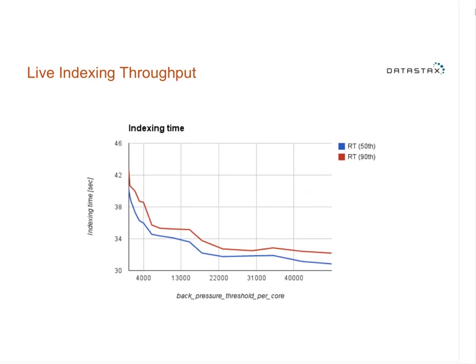One tunable within Solr itself is the back-pressure threshold per core. For those who have deployed search before, this is a key tunable: if indexing starts consuming more resources than anticipated, it kicks in an optimization disabling soft commits. Increasing this value increases throughput, but the downside is increased memory consumption, which can result in GC pressure. In DSE 4.7, we can increase indexing throughput without a noticeable impact on garbage collection, effectively doubling indexing throughput.